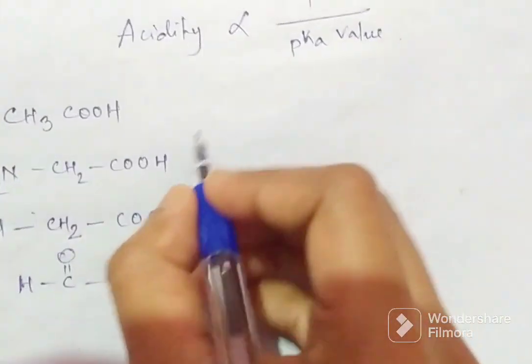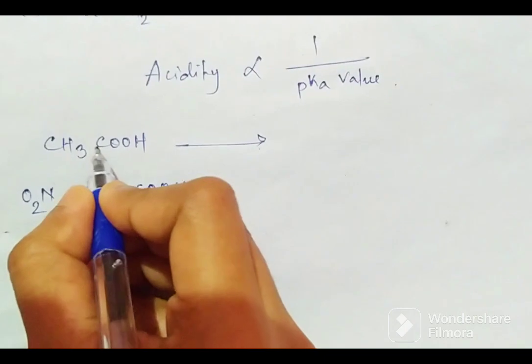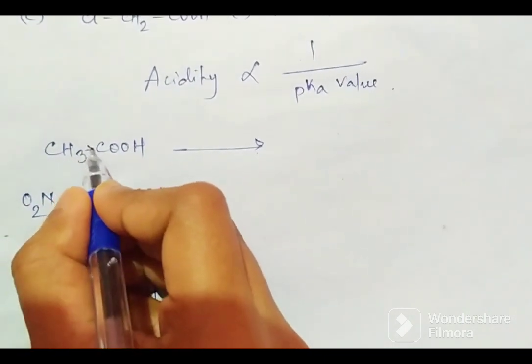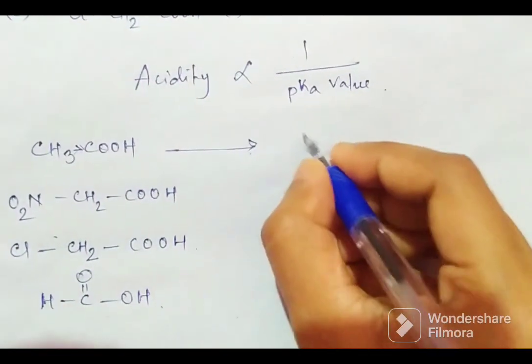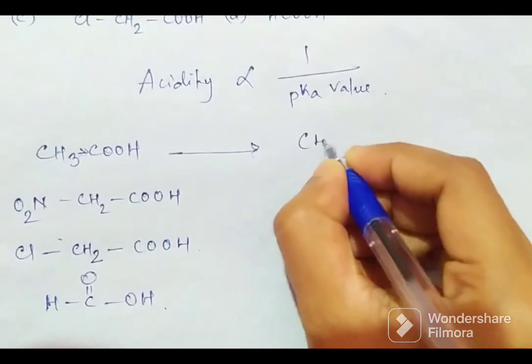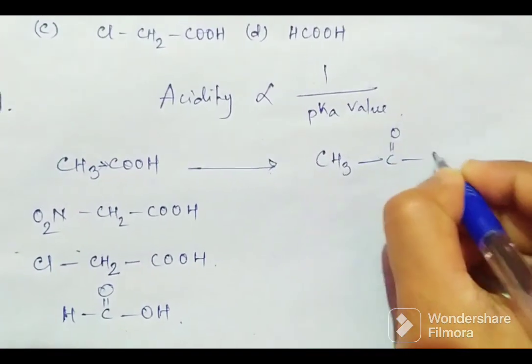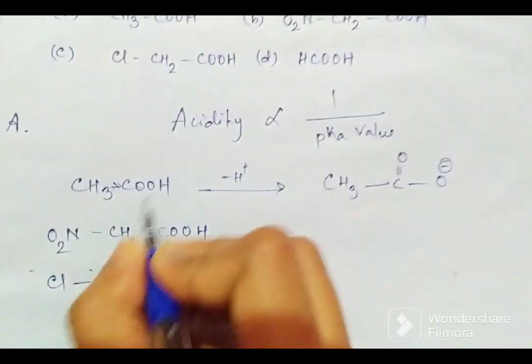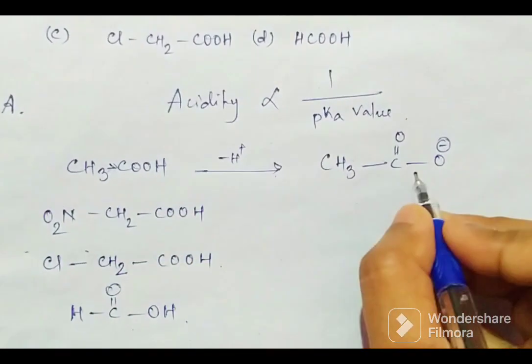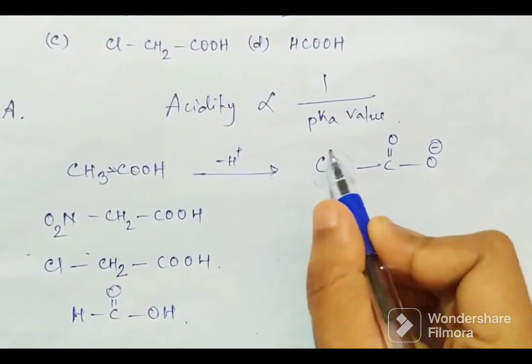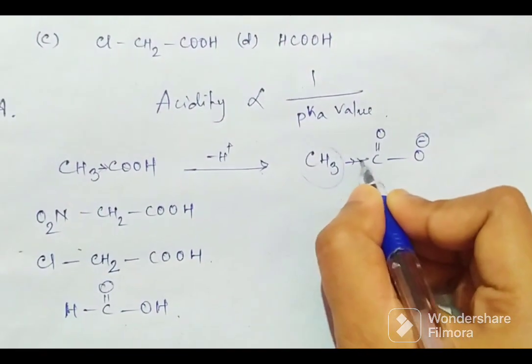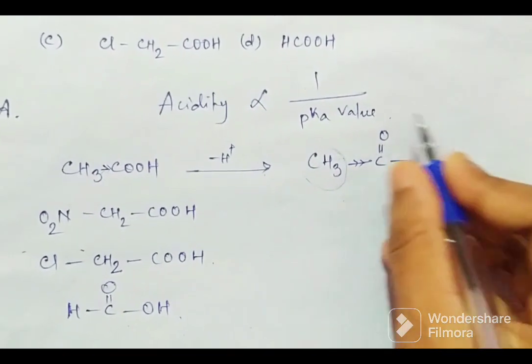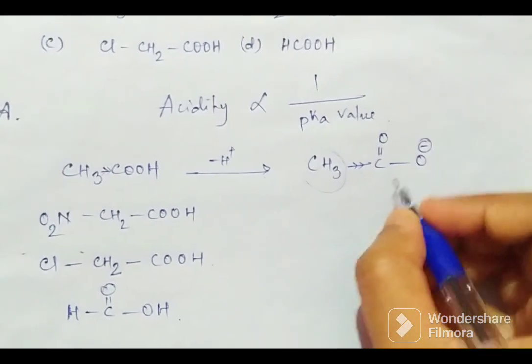Now if we see in the first case, CH3 group has plus I effect, so it will donate electrons. It will push electrons. So what will happen? If we remove H+ from this compound, then because of the plus I effect, the CH3 group will push more electrons towards the oxygen atom, so this carbanion will be less stable.